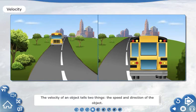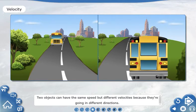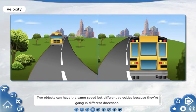The velocity of an object tells two things, the speed and direction of the object. Two objects can have the same speed but different velocities because they're going in different directions.